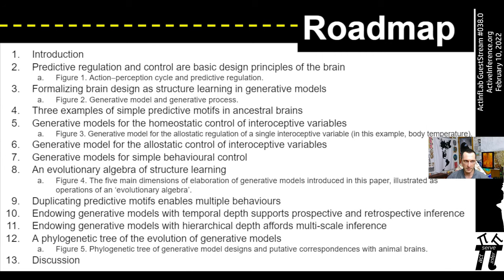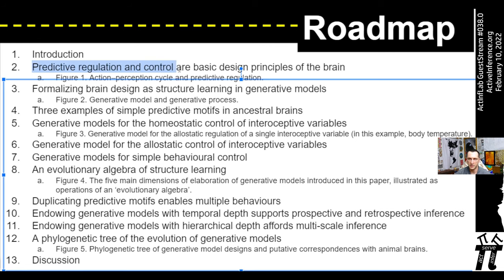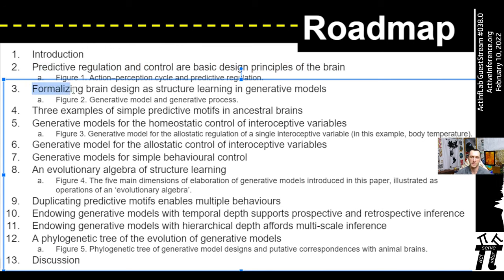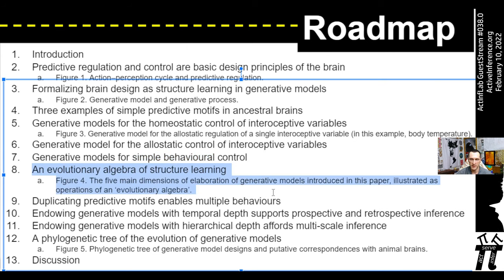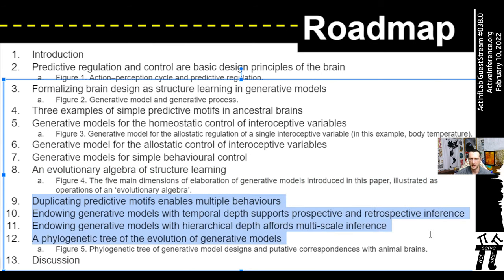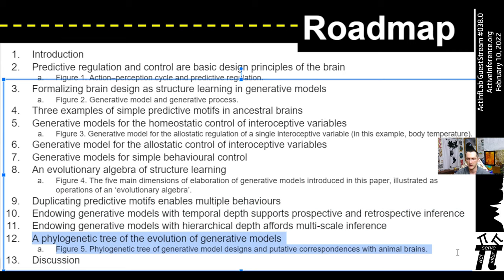The roadmap: after the introduction, section two introduces predictive regulation and control — perception, cognition, and action — as basic design principles of the brain. Section three formalizes the brain as doing structure learning in generative models. Three examples of simple predictive motifs in ancestral brains follow — homeostatic control, allostatic control, and simple behavioral learning — then the evolutionary algebra of structure learning, discussions of behavioral switching, temporal depth, hierarchical depth, and a phylogenetic example.